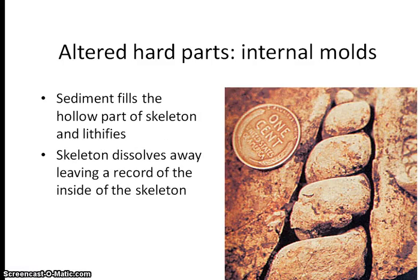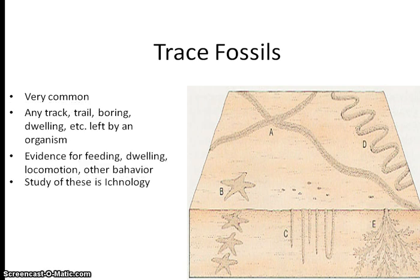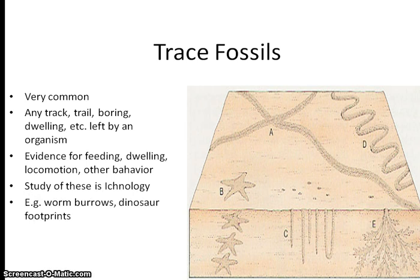The last fossil type is trace fossils. As mentioned at the beginning, these are evidence of once-living organisms — they could be tracks of the organism moving or burrows where the organism lived. These are actually really interesting because we can use them to understand more about the organisms and the environments they lived in.